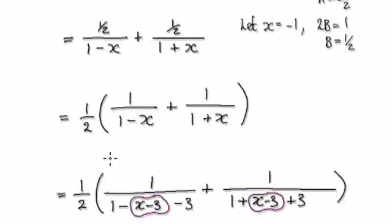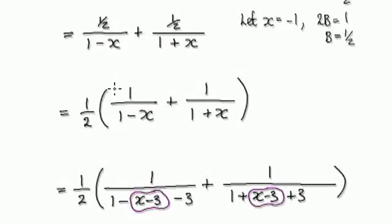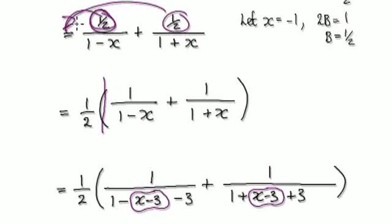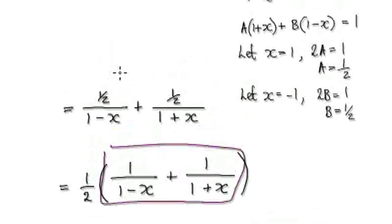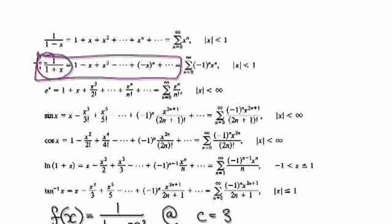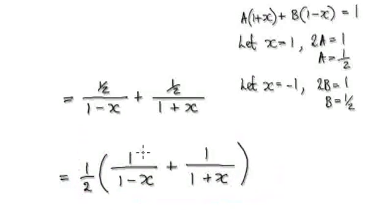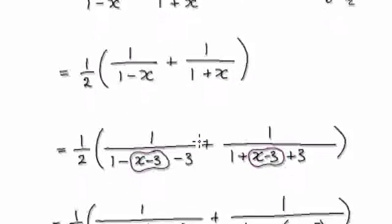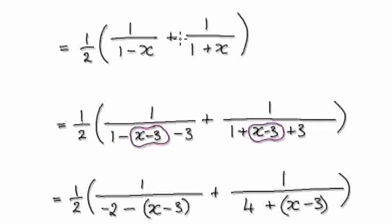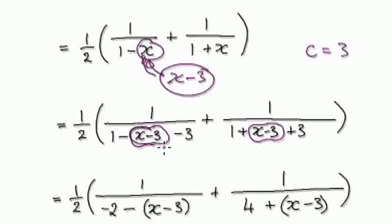Now factor out the half, so that will then take you to here. This is something very close to what we had right from the start — we can make use of this familiar form. Because we are trying to evaluate it at c equals 3, we can now insert x minus 3 into here, and that will then give us this.